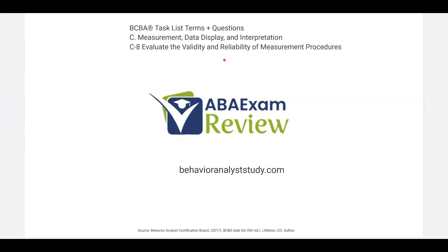Welcome back to ABA Exam Review and the continuation of our BCBA Task List 5th Edition series with C8: Evaluate the Validity and Reliability of Measurement Procedures. This really should also include accuracy because we're going to cover all three. Your data must be valid, reliable, and accurate for that data to be useful in your behavior change procedures.